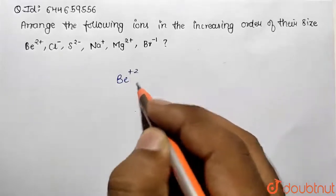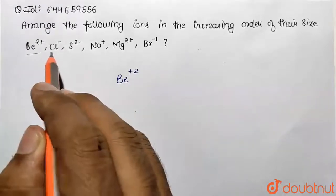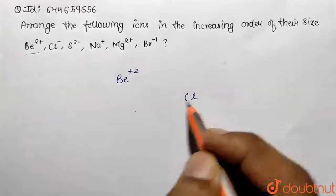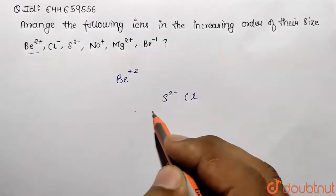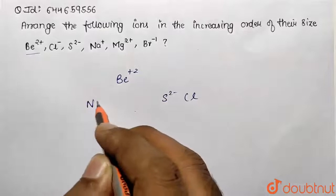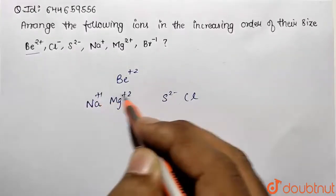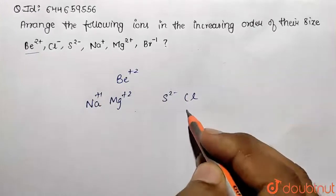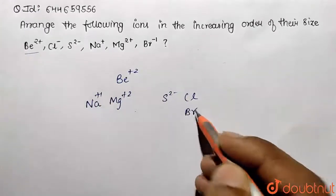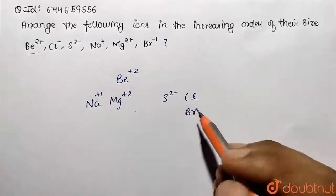Then chlorine is from third period, then sulfur sulfide ion is also from third period, then sodium is also from the third period, then magnesium is also from the third period. So these are from third period. Now bromine is basically from the fourth period, so we have put them in their order so that we can easily identify their sizes.